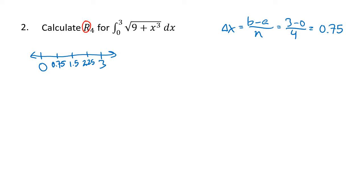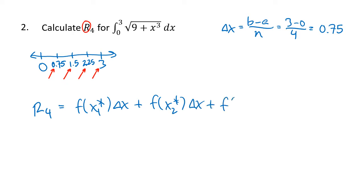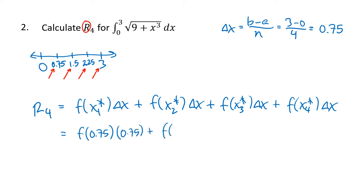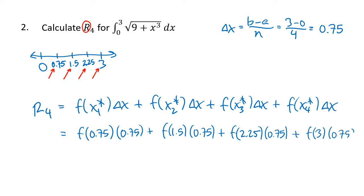Because we're using right-hand endpoints, the right-hand endpoints of each subinterval are 0.75, 1.5, 2.25, and 3. So R4 = f(0.75)·0.75 + f(1.5)·0.75 + f(2.25)·0.75 + f(3)·0.75. These are just base times height for each rectangle. Plugging into our function and working it all out, we end up with approximately 12.827.